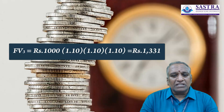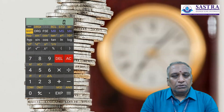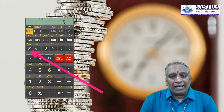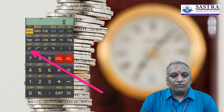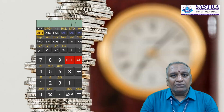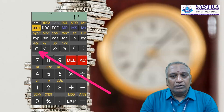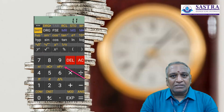There are some easy methods by which you can find the future value factor. You can use calculators; they have inbuilt functions. You would have noticed the key y^x in the calculator, which can be used to obtain the future value factor. Suppose you want to find the factor for 1.10 — enter 1.1, press the key y^x, and enter 3. Immediately, you will obtain the factor value.